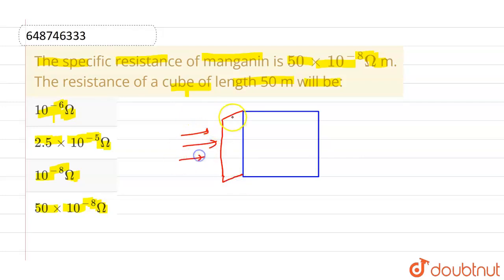So current will pass through this cross-sectional area and the current will travel a distance of 50 meter because this is the length of wire. So as we know, resistance is given by rho L divided by A, where rho is the specific resistance which is given as 50 into 10 raise to the power minus 8.